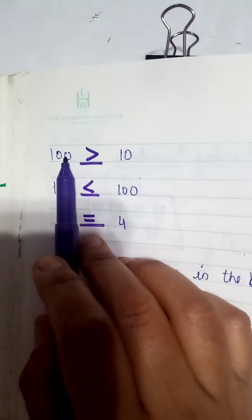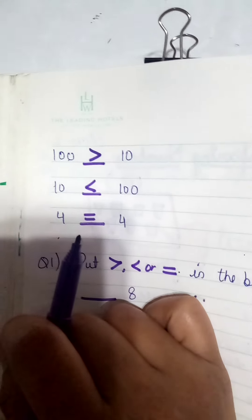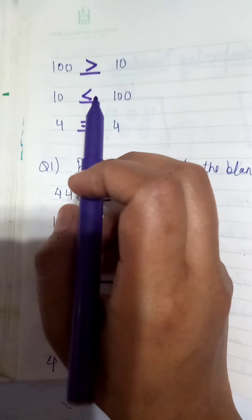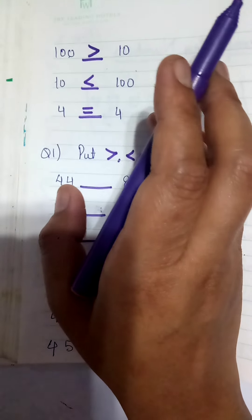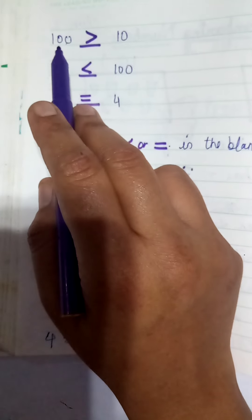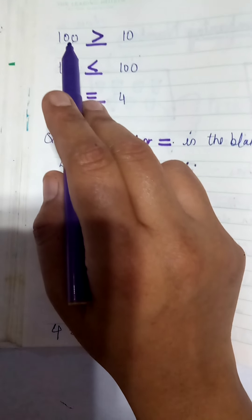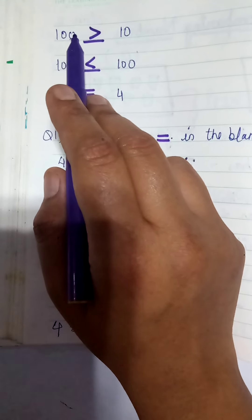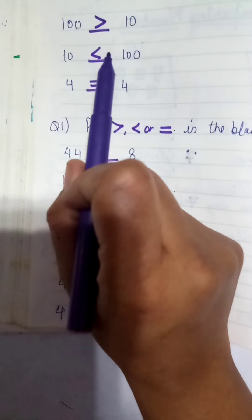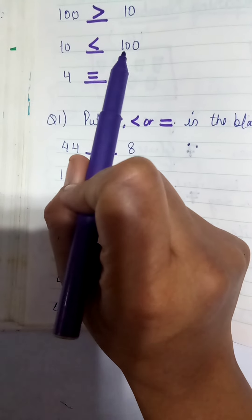This is one hundred and this is ten. Students, tell me which one is greater. Which number comes after ten? Yes, hundred will come after ten. Ten comes first in the counting, and then after the ending of the counting, hundred will come. So which one is greater? Yes, hundred. So the alligator will eat hundred, because the alligator only likes the greater number. So the alligator's mouth will open from the hundred side.